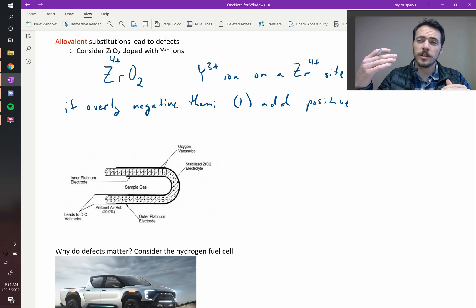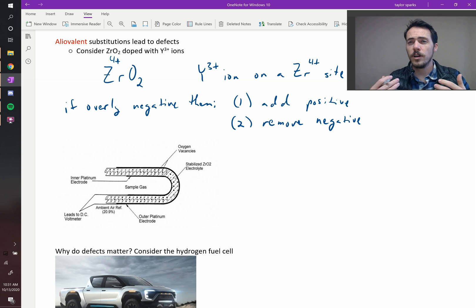So instead of adding more positive cations, what else could we do? We could take away some of the negative. If we remove some of the negative, what does that look like? It means that instead of having two oxygen sites filled, we're now going to have some of those oxygen sites vacant.